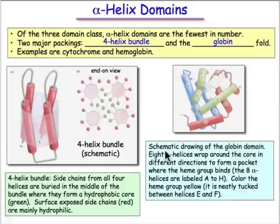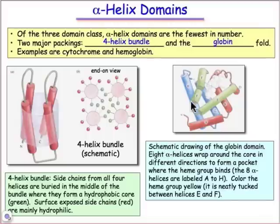Let's take a look at the Globin domain. The Globin domain consists of 8 or more different α-helices, and notice how they are not parallel at all — they pack together in a crisscrossed way. The main thing to draw attention to is how they form a pocket that will house a heme porphyrin.